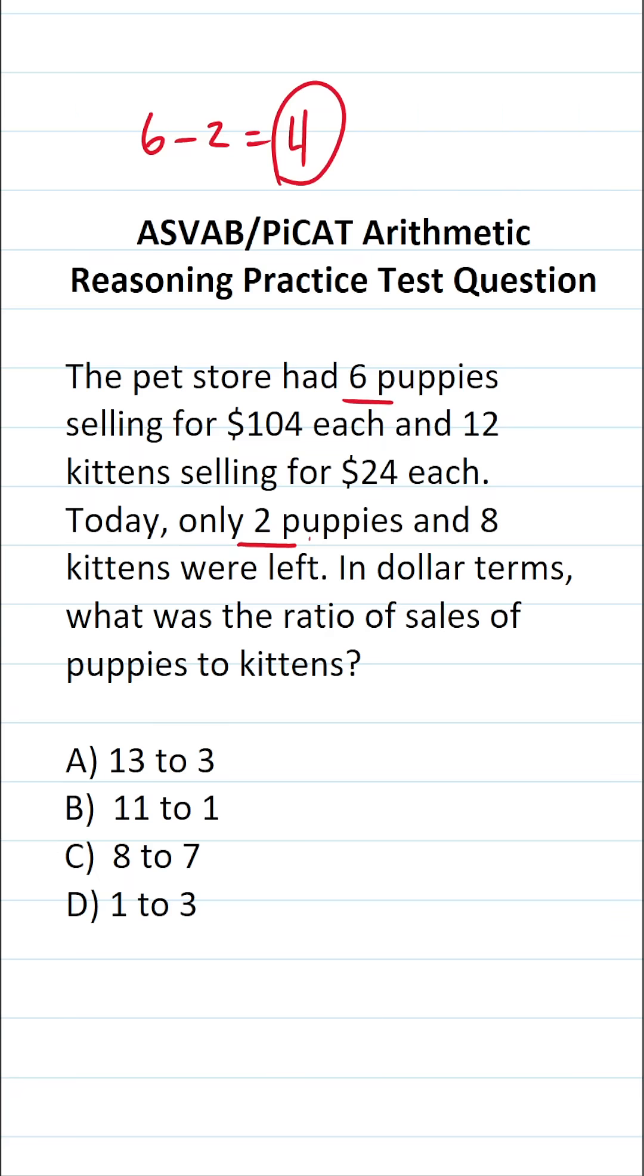So to calculate that in terms of dollars, we're going to do the four puppies that were sold times the amount each one sold for, which is $104.